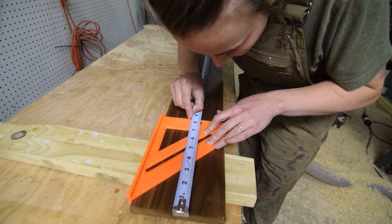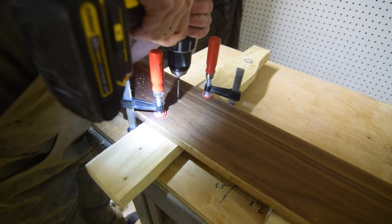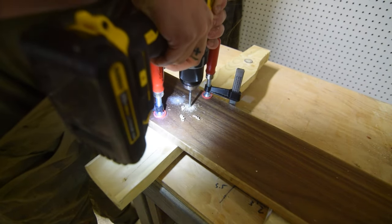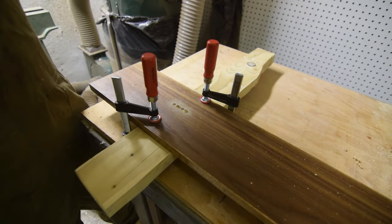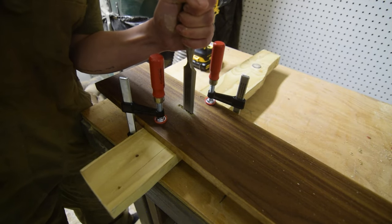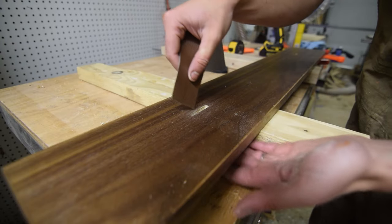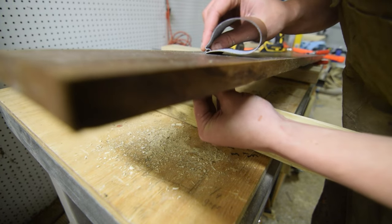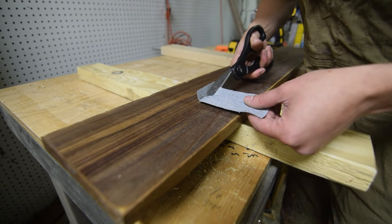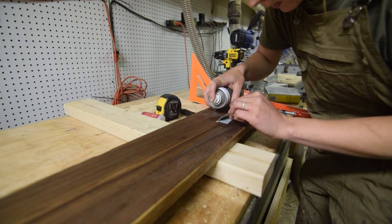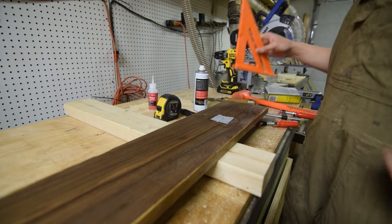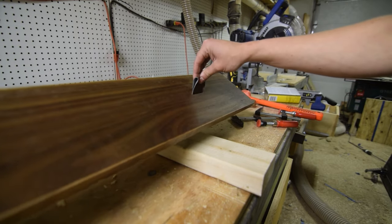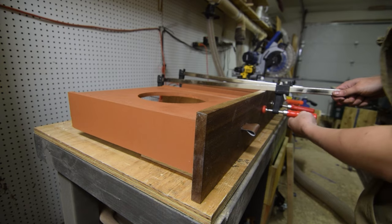With that dry, I cut two recesses for the pleather straps that would serve as the drawer handles. To secure the leather, I used Starbond's Clear Thick Super Glue and the accelerator to expedite the cure. Within seconds, I had a strong bond and could move on to anchoring the drawer front to the drawer.